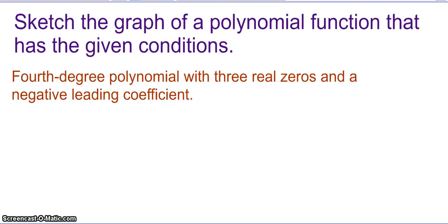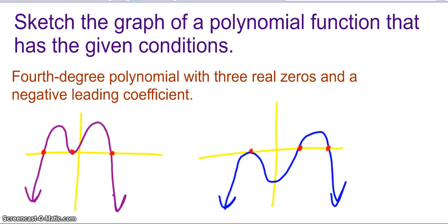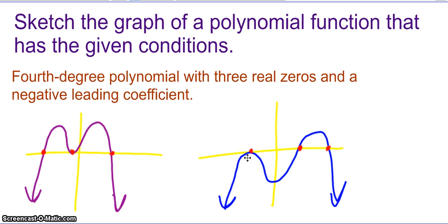Now let's sketch the graph of a polynomial function with given conditions: a 4th degree polynomial with 3 real zeros and a negative leading coefficient. There are multiple correct answers. If it's 4th degree with a negative leading coefficient, the end behavior needs to be down-left, down-right. With 3 real zeros, I'm going to cross the x-axis twice and then just touch it and bounce back at some other point. Your answer might look slightly different as long as it meets those requirements and has the correct end behavior.